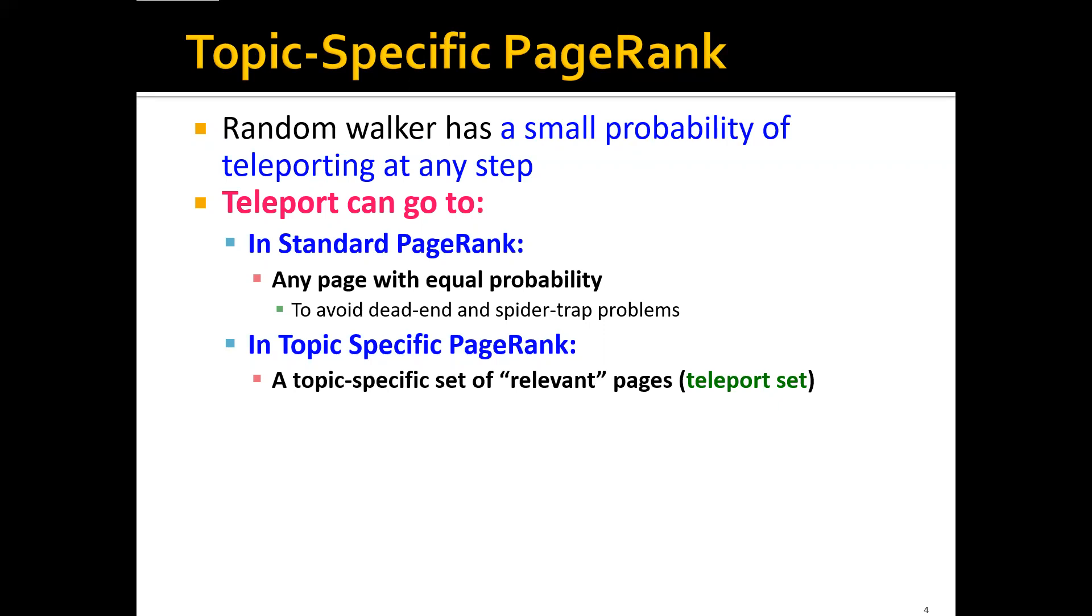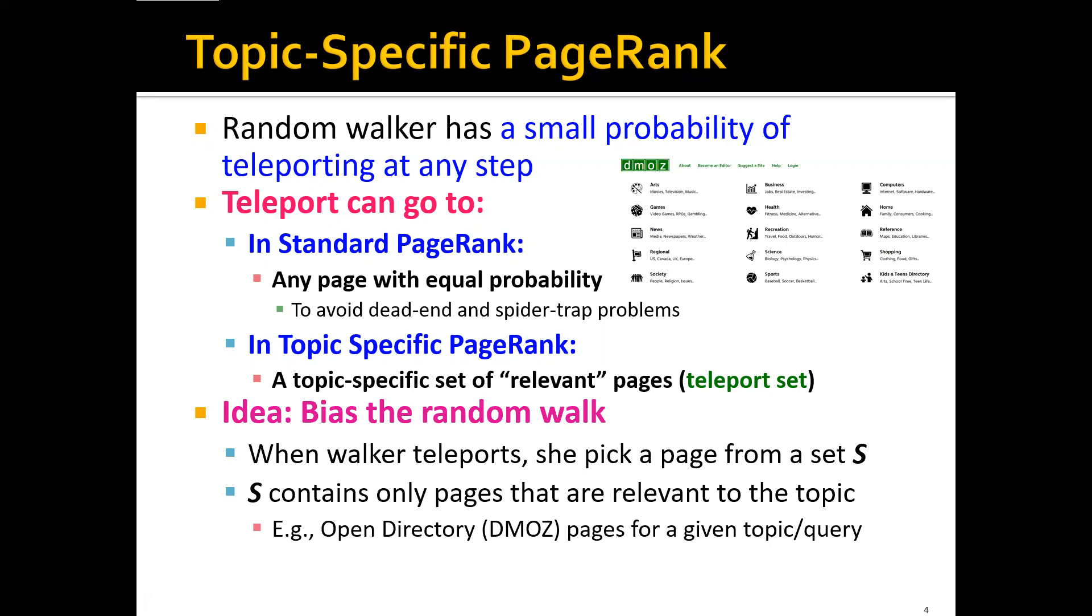Now, in the topic-specific PageRank, we'll do something slightly different. In here, the teleport can actually go to a topic-specific set of relevant pages. And we call this a teleport set. So basically, the idea is to bias the random walker. When a walker teleports, this topic-specific PageRank will pick a page from a teleport set S. And this set S can contain only pages that are relevant to the specific topic. For example, this set S can be from the open directory pages for a given topic. Let's say that it can be a set of all the webpages from the directory arts, or it can be the set of all the webpages from the directory business.